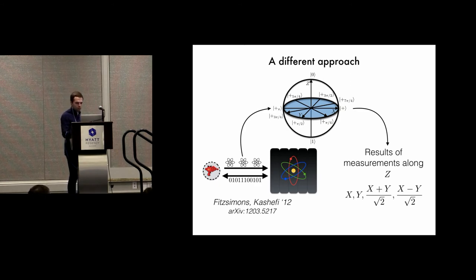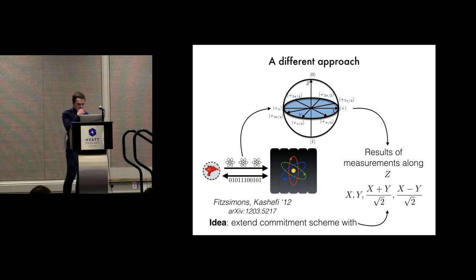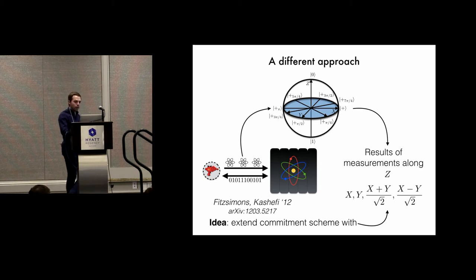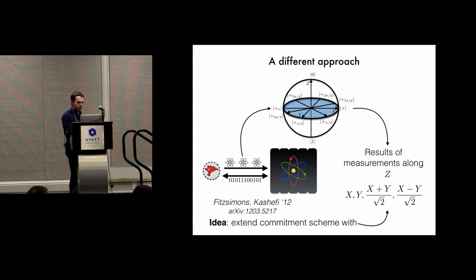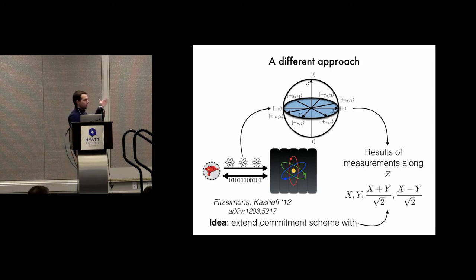Mahadev's commitment scheme only worked for the z and x directions, and what we did was essentially modify the commitment scheme to extend it with additional directions as well: y, x plus y, and x minus y. In the Fitzsimmons-Kashefi protocol, for each qubit, depending on the size of the computation, it's either a uniformly random 0 or 1 state — one of the pole states — or it's uniformly at random one of the states in the equatorial plane. So it's a choice between a z-basis state or a state in the equatorial plane, but after that it's just uniformly at random.